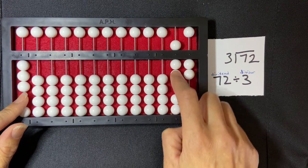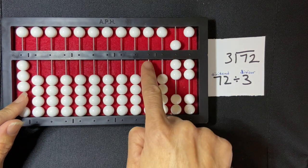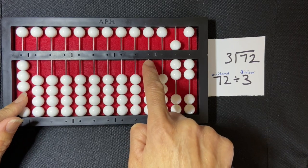So I'm going to skip a rod and then start my division, start to write my quotient here on the fourth rod.